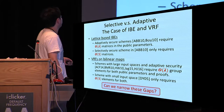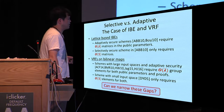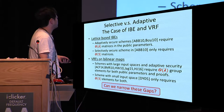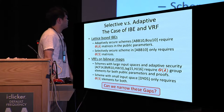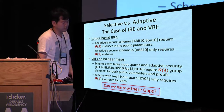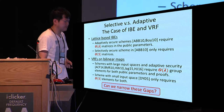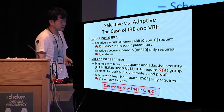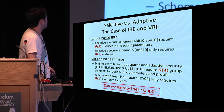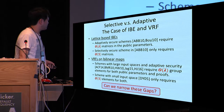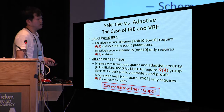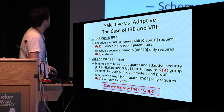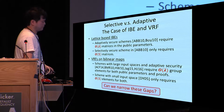In Verifiable Random Functions on bilinear maps, we have schemes with large input space and adaptive security. However, all these schemes require order of lambda group elements for public parameters and proofs. On the other hand, schemes with weaker guarantees only require a constant number of group elements for both. So there are gaps in efficiency between them.